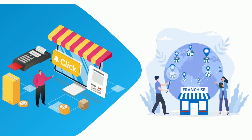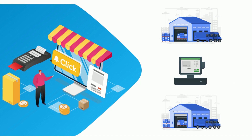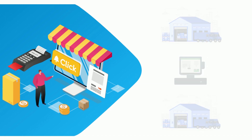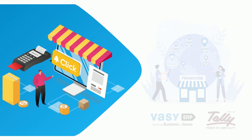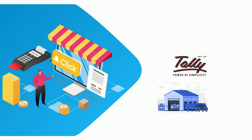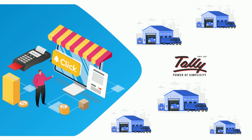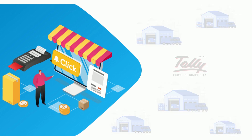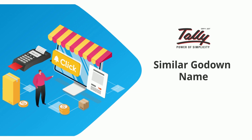Many merchants have multiple branches and franchises and tend to segregate and manage all their data into separate go-downs under the same company in Tally. Waze ERP will help you get this data in a segregated manner as per your go-down. It is mandatory for merchants to have the multiple branches and franchises created in both Waze ERP and Tally. Please understand that Tally refers to these multiple locations as go-downs, so you need to create the multiple go-downs in Tally as well. The name of the go-down in Tally must be the same as given in Waze ERP for the branch or franchise.